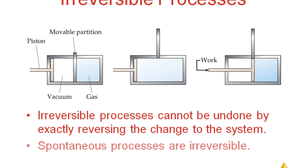All spontaneous processes are irreversible. Spontaneous process means something that happens without any outside intervention — without doing any work. If you do not have to do any work, it happens as it is in the system — that is a spontaneous process. And spontaneous processes are irreversible, just like lifting the partition: the gas diffuses spontaneously, and that cannot be reversed simply by putting the partition down.